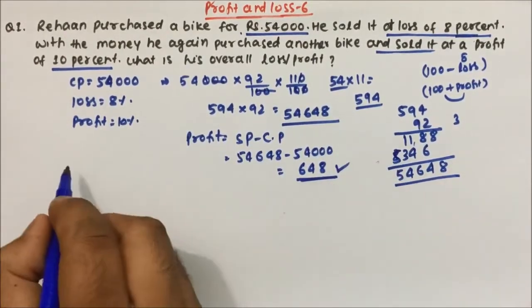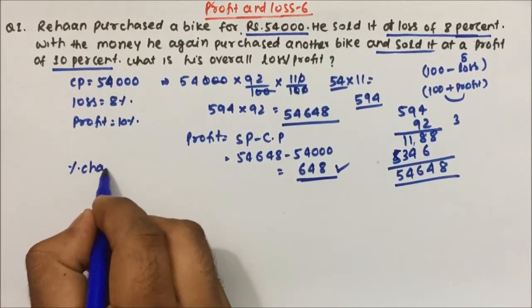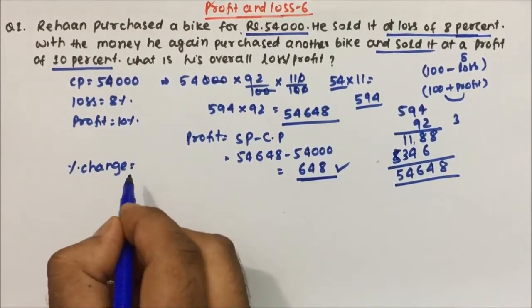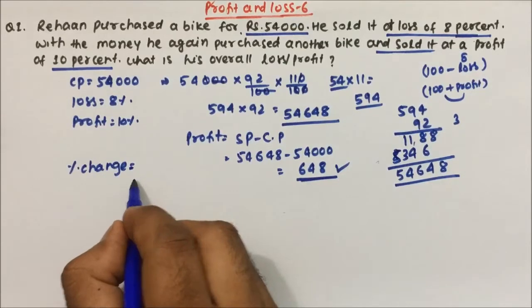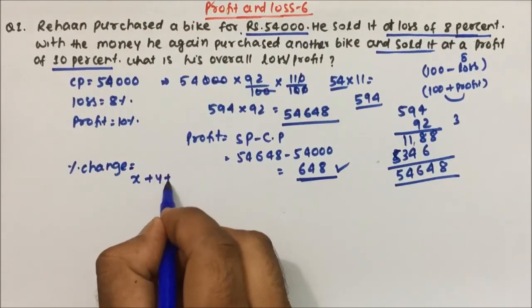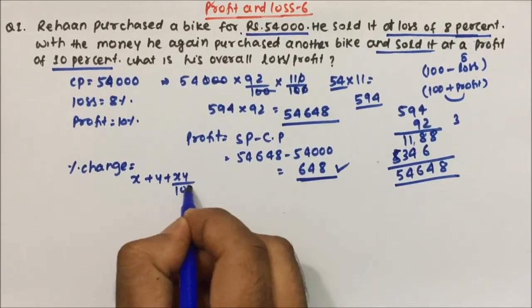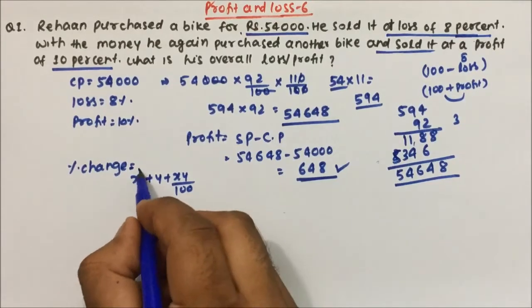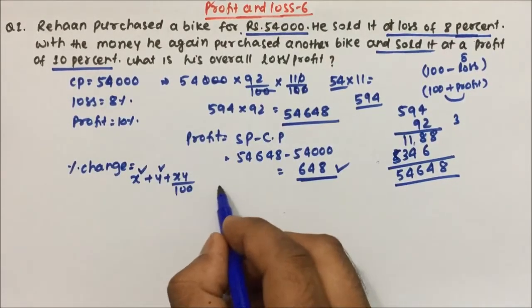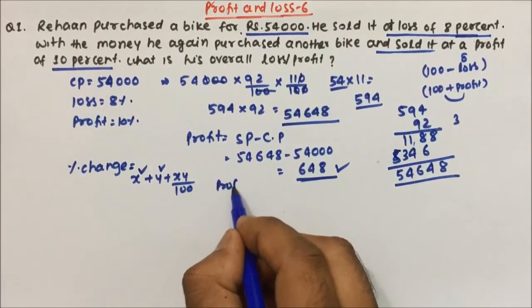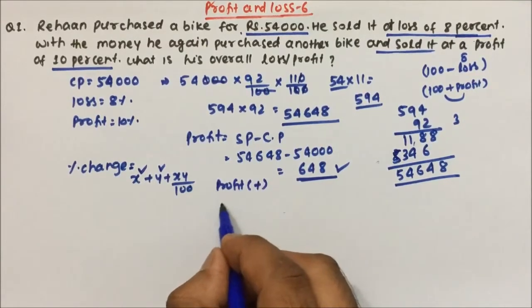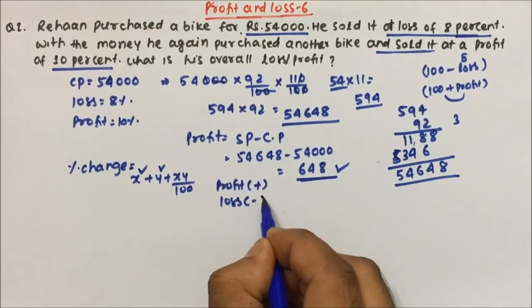Now the same question, we are going to do it by percentage of change method. Percentage of change will give you the cumulative change. So this will be x plus y plus xy by 100, where x is the first change and y is the second change. If there is a profit, then we write plus value. If there is a loss, then we write minus value.